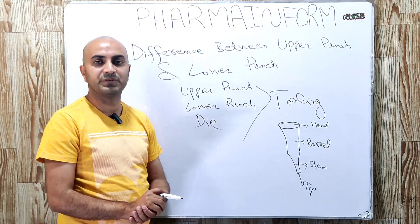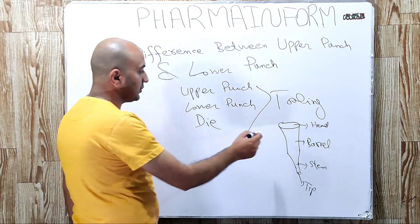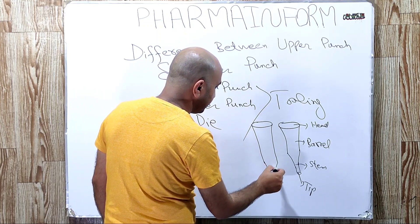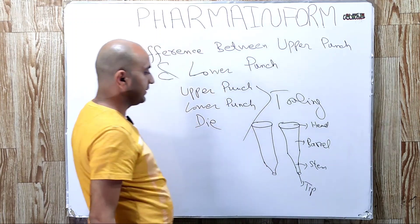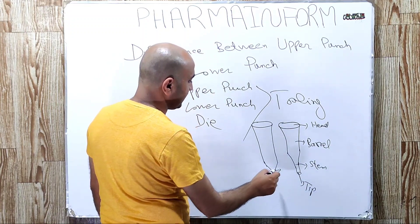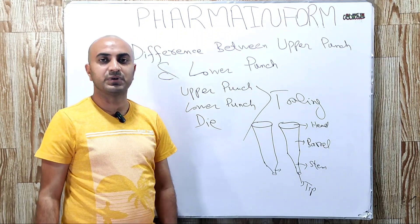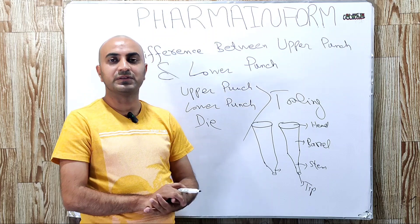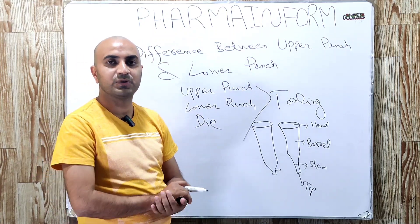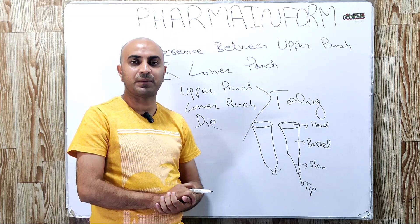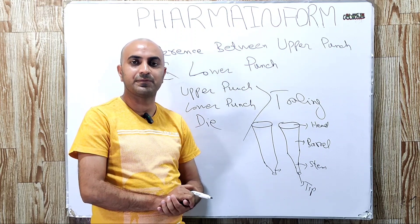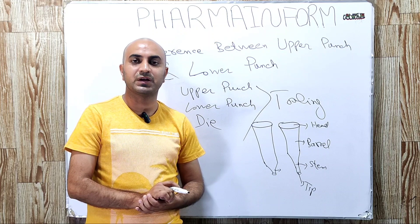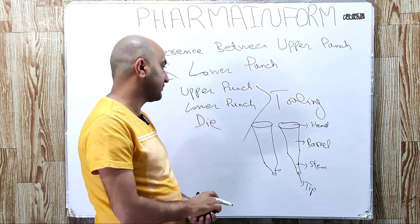So if we talk about the differences, first of all we will take it on the basis of physical appearance. On physical appearance, usually the length of upper and lower punch is the same, but the difference lies in its stem length. In the upper punch, the punch stem is short, and in the lower punch, the punch stem is long. The reason behind this is that when the tablet is compressed, we have to eject it from the die. For the ejection of the tablet from the die, the lower punch has a longer stem, so that the tablet can be ejected by pushing the lower punch in the upward direction.